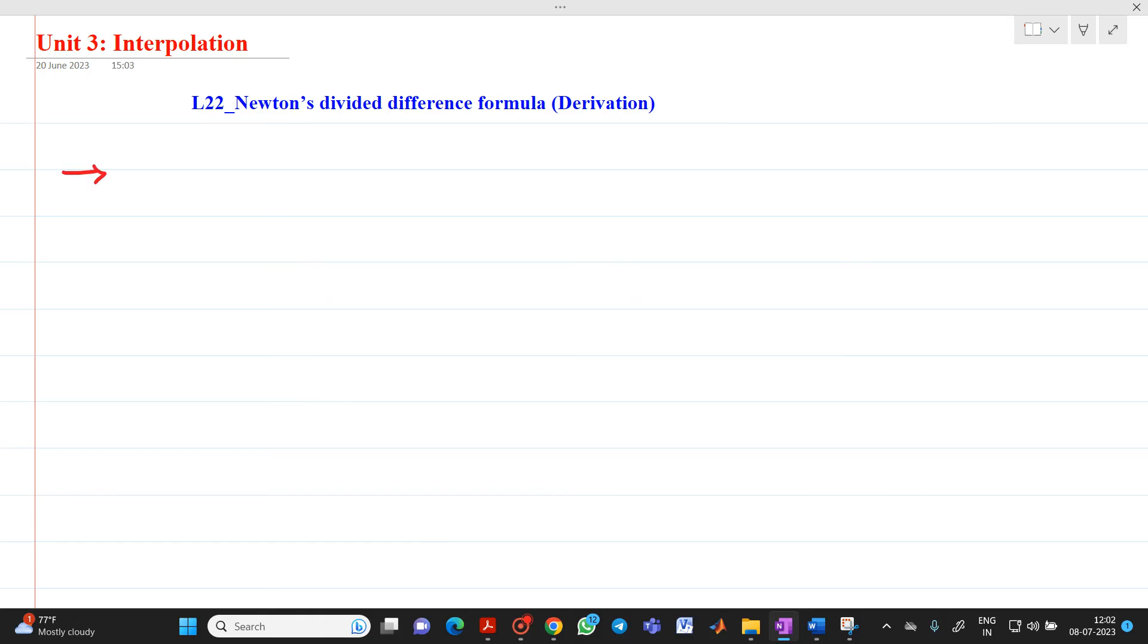Now, let us consider that y0, y1, up to yn be the values of a function y equal to f of x. This y equal to f of x function is unknown, but we know values of y0, y1, y2, up to yn corresponding to x0, x1, up to xn. Now, let y be found at some value of x.